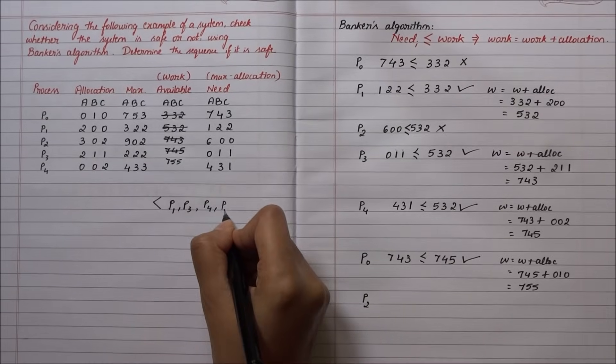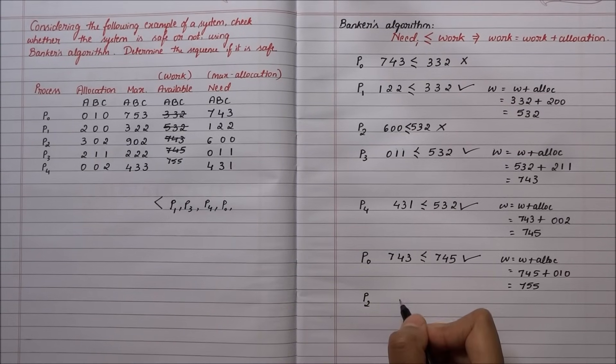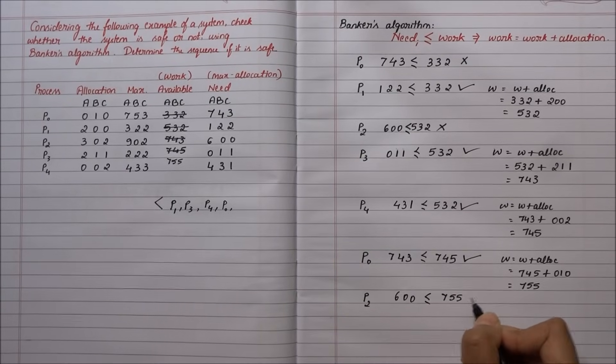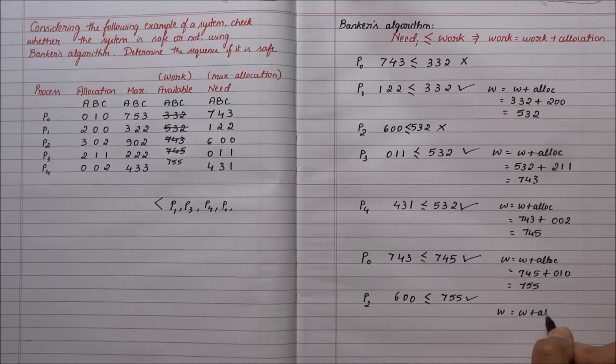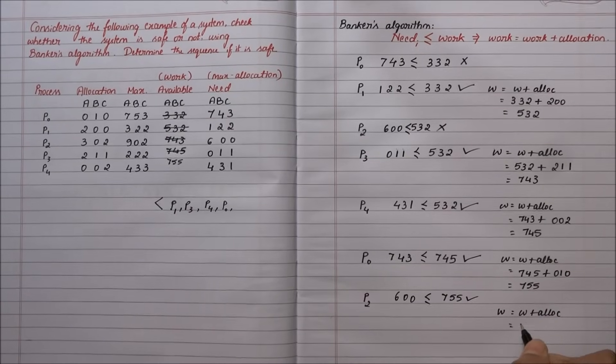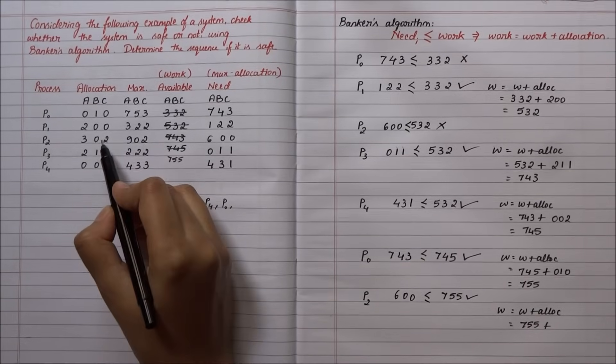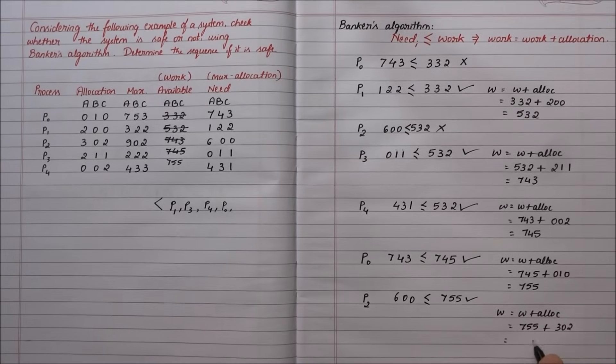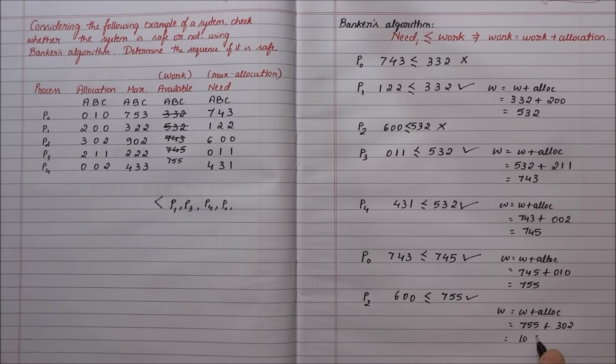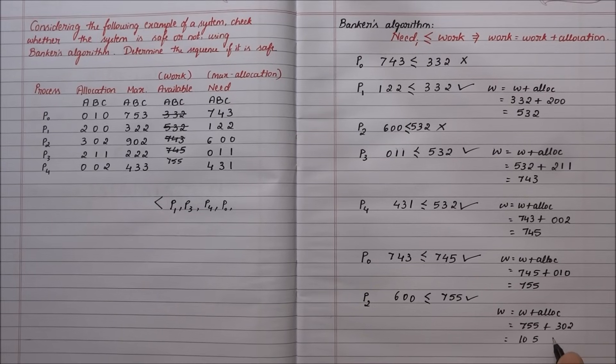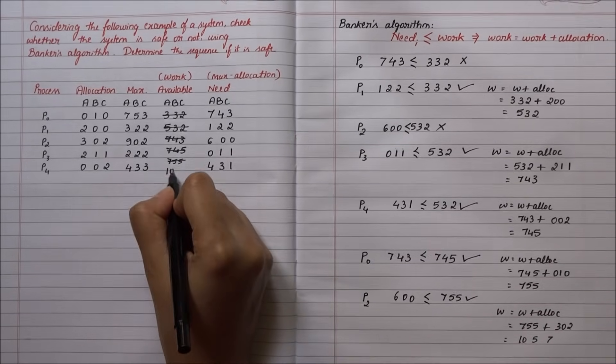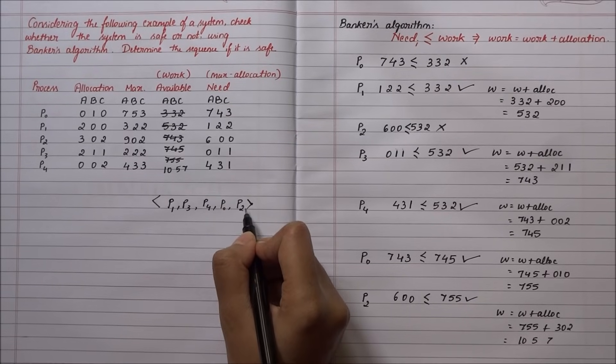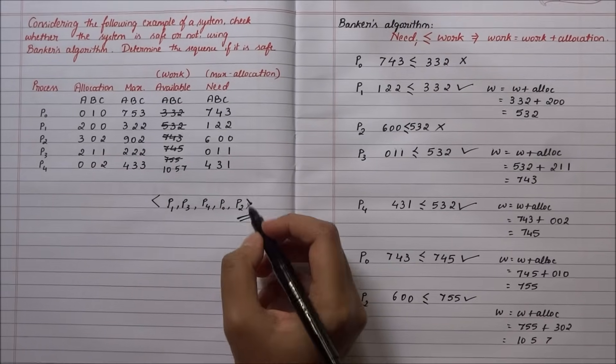Need of P2 is 6-0-0, less than or equal to 7-5-5. This is true. Work equals work plus allocation: 7-5-5 plus allocation of P2, which is 3-0-2, totals 10-5-7. This is the final work. P2 has also entered the safe sequence. This is the safe sequence of the given system.